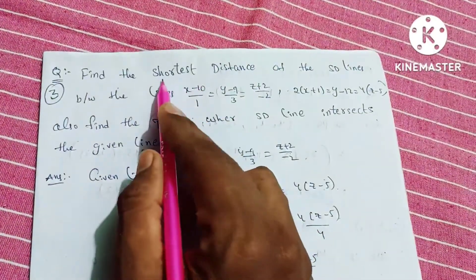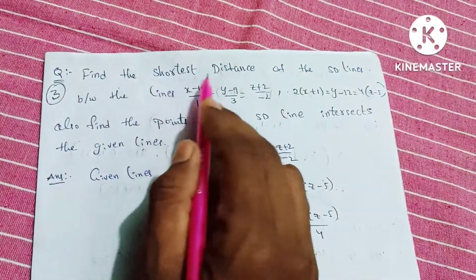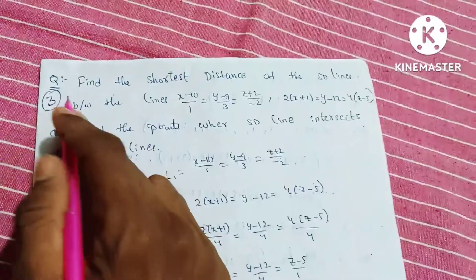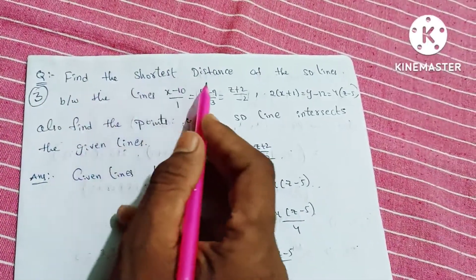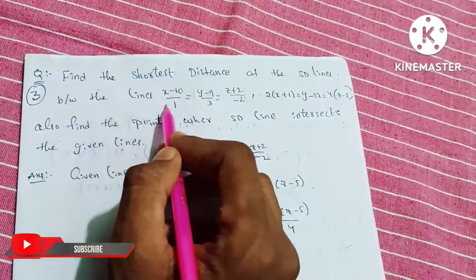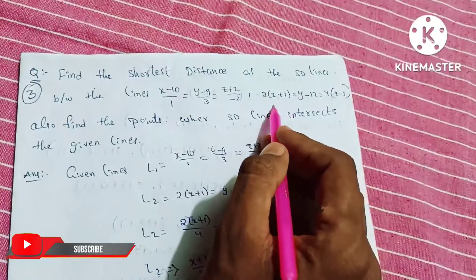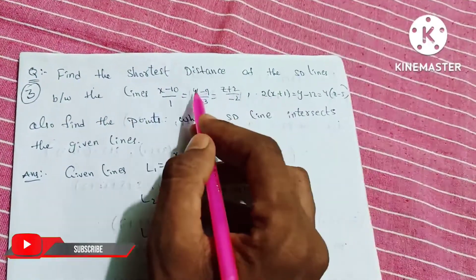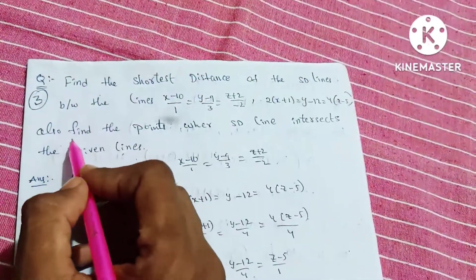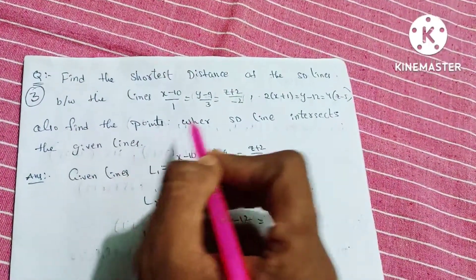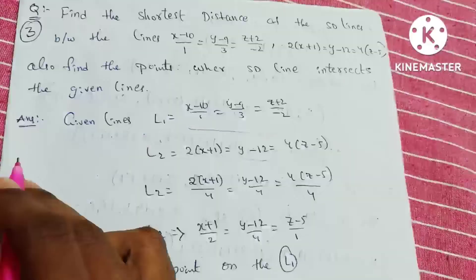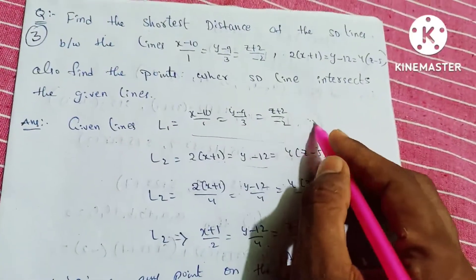In this chapter on shortest distance, this is problem 3 plus 1. Find the shortest distance between the skew lines. One line equation is given; you can write the line equation. It's the same one. Let's convert the line equations. Find the points where the SD line intersects the given lines. Let's say line 1 and line 2.